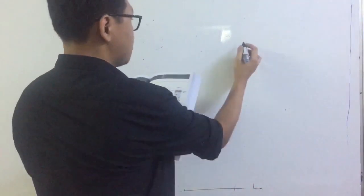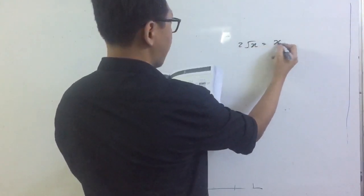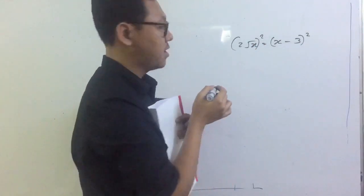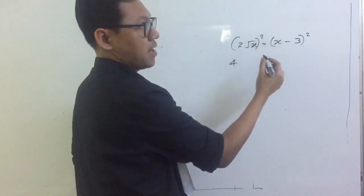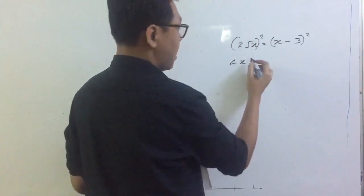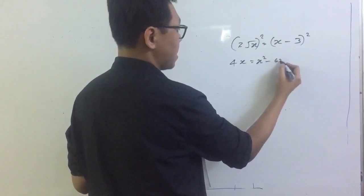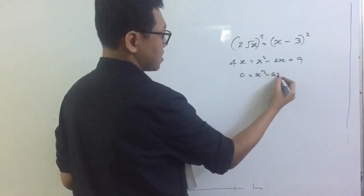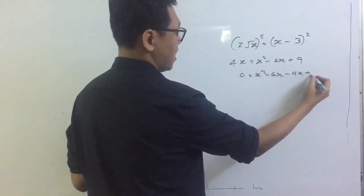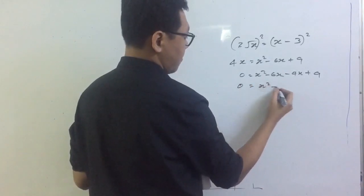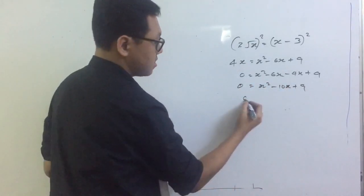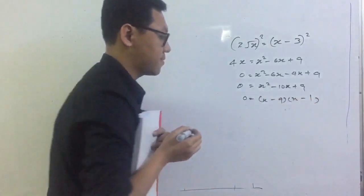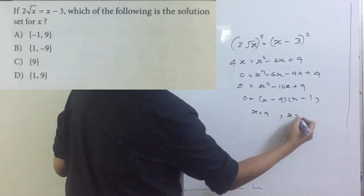Let me show you another example. This one is 2 times the square root of x equals x minus 3. As before, we square both sides. So 2 squared is 4, and the square root of x squared is x — so 4x equals x squared minus 6x plus 9. Moving terms: x squared minus 10x plus 9 equals zero. Factoring gives x equals 9 and x equals 1.